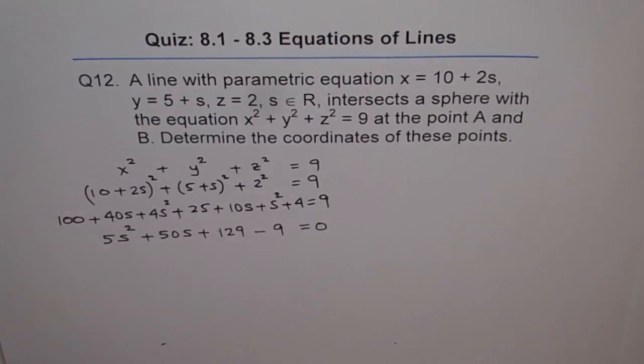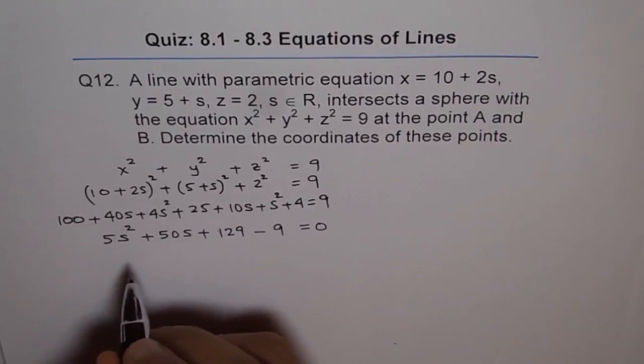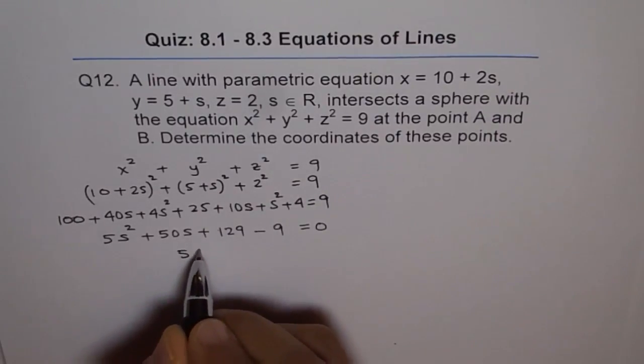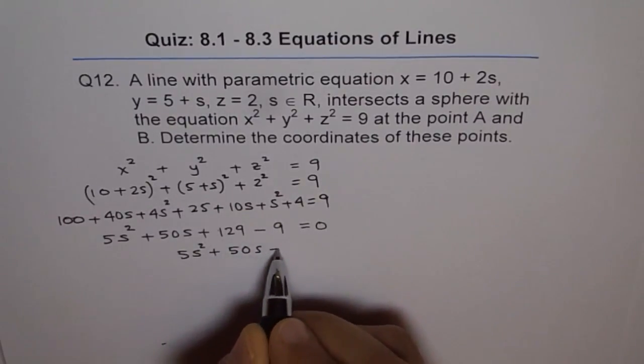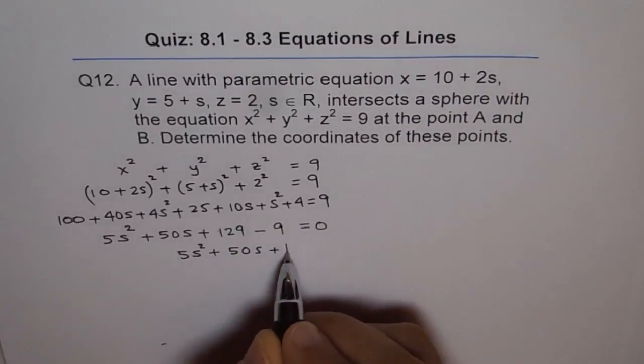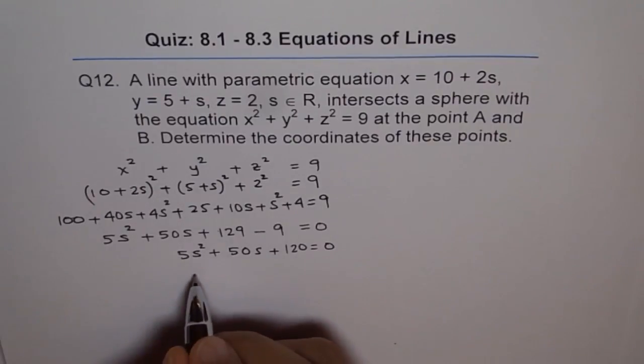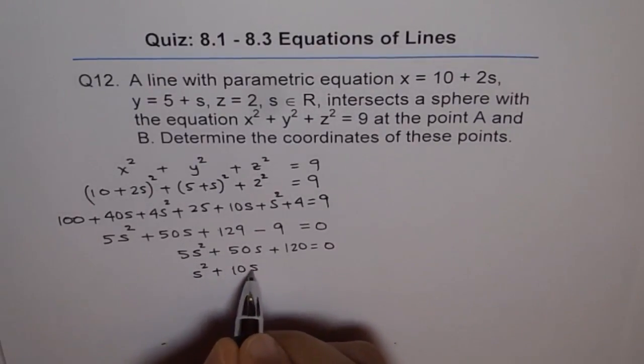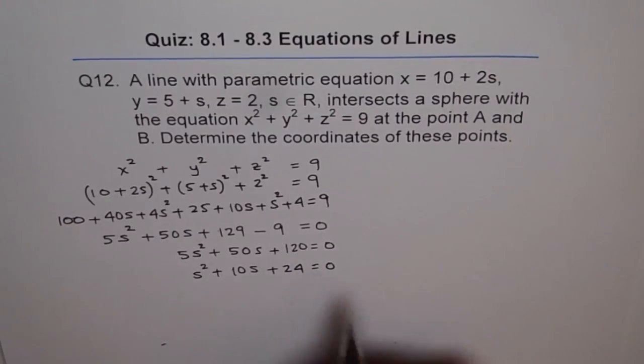Now that's a quadratic equation in variable s. We can always find the value of s. So we can simplify this and then we get 5s square plus 50s plus 129 minus 9 is 120 equals 0. We can factor out 5 from here and so we get s square plus 10s plus 5 goes 2 times and 24.